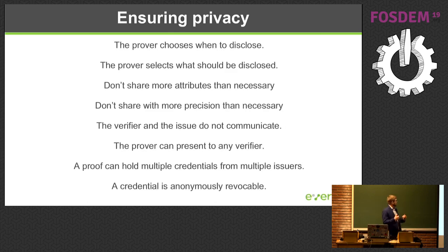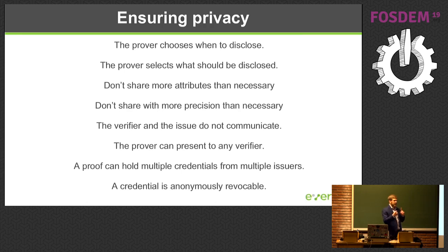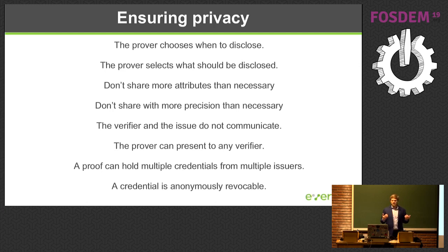As a result, with my verifiable claims I need to ensure my privacy by choosing when I disclose, choosing what I share, choosing how precise it's going to be, making sure I'm using different IDs with the issuer and verifier so they can't communicate about me. I should be able to use my identity with any verifier I want, mix and match credentials from multiple identifiers, and revocation should be anonymous — so people can't go and look and see that the state of Utah has revoked all the following driver's licenses, which can be embarrassing in a very different way than me presenting my driver's license and the verifier seeing it's been revoked.